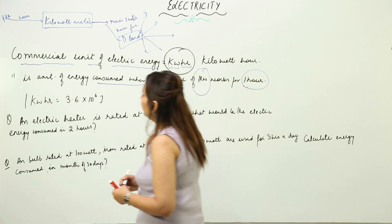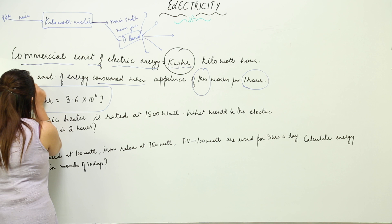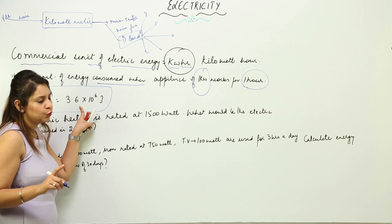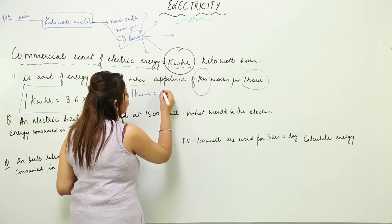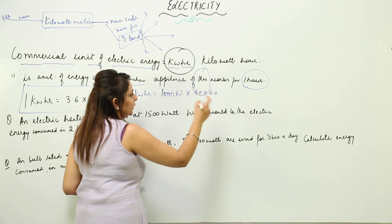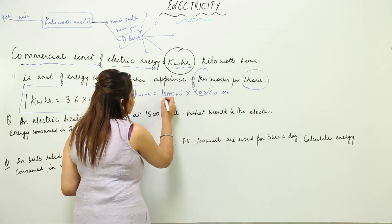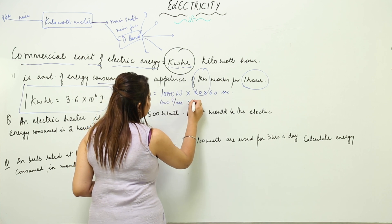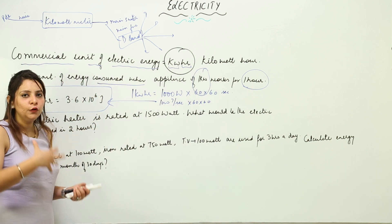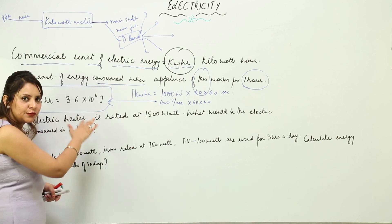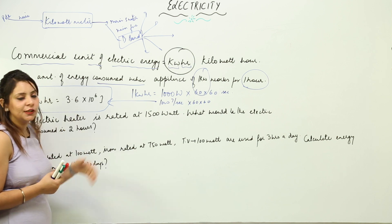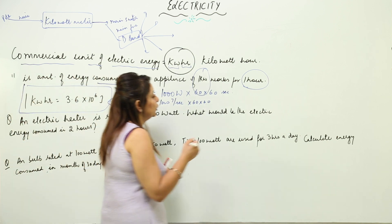1 kilowatt hour is equal to how many joules? Since the unit of energy is also joule, it comes out to be 3.6 × 10⁶ joules. This is because 1 kilowatt hour means 1000 watts × 3600 seconds, which equals 1000 joules per second × 3600, giving 3.6 × 10⁶ joules. So if you have kilowatt hours and need to convert to joules, just multiply by 3.6 × 10⁶, or vice versa.